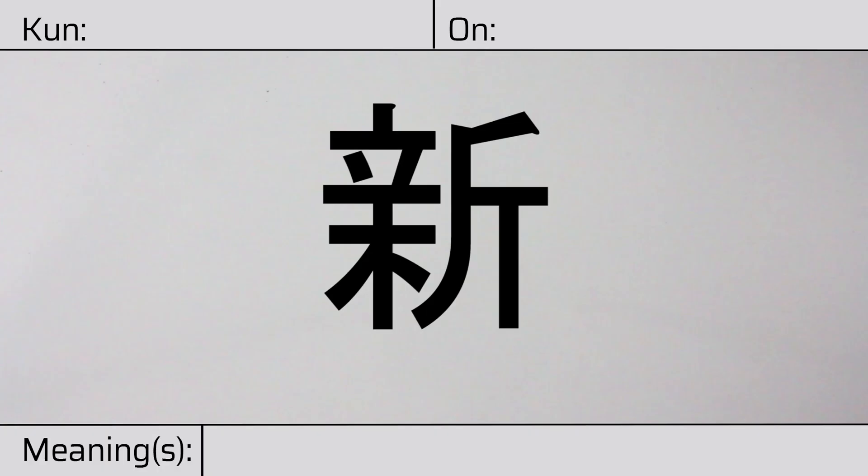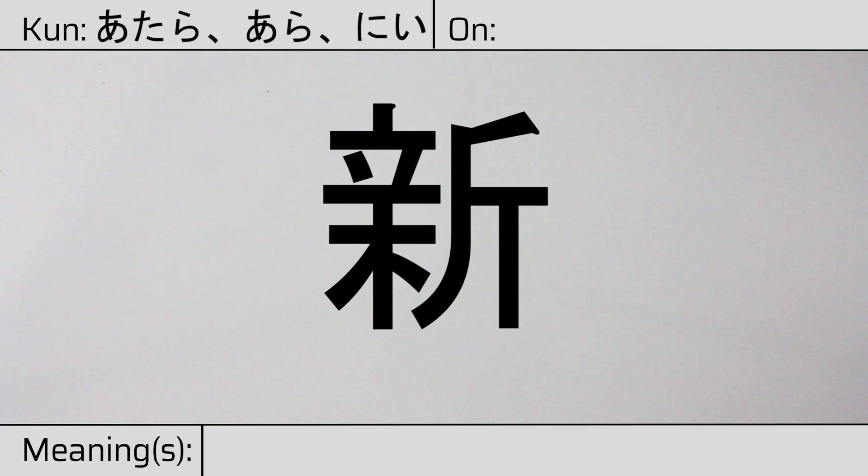Welcome to this lesson on Japanese kanji. Today, we'll be discussing this character. This kanji has kunyomi, or Japanese readings of atara, ara, or ni. And it has an onyomi, or Chinese reading of shin.